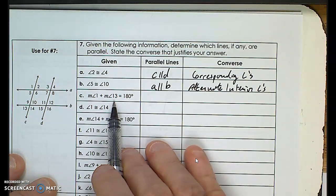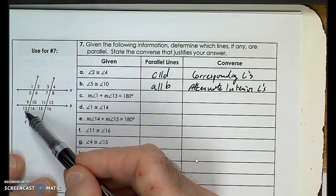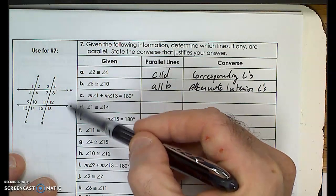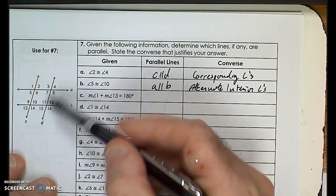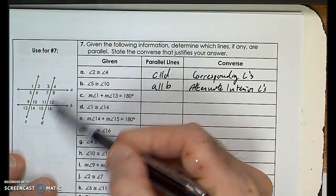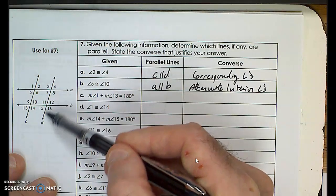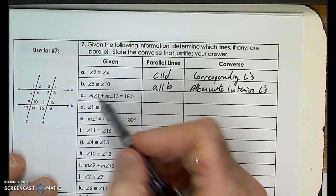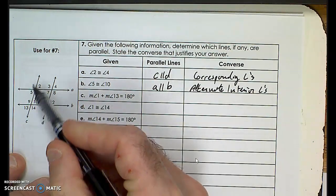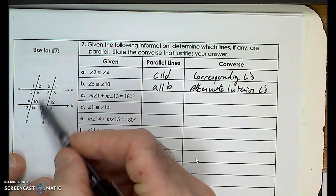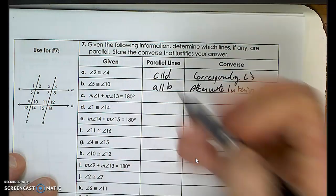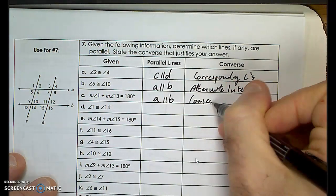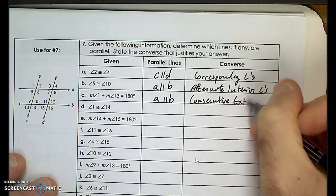Given angle 1 and angle 13 add up to 180 degrees: these are from two intersections that cross over lines A and B. Angles 1 and 13 are same-side exterior angles. Since they add up to 180 and are supplementary, we conclude A and B are parallel by the consecutive exterior angles converse.